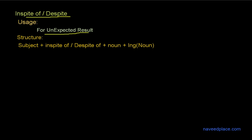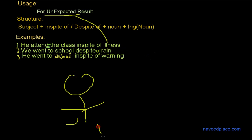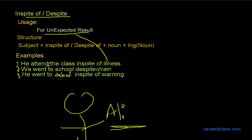Now let's see the structure. The first example is: 'He attends the class in spite of illness.' Here we are showing an unexpected result. For example, my friend Ali is ill today, so we would expect he will not come to school. But he came to school — that is the unexpected result.